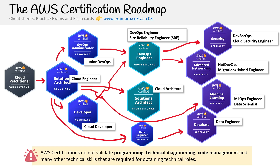Even if you don't plan on taking the other associates like the SysOps Administrator, the Developer, or the Data Engineer, you can study the SysOps Administrator, the Solutions Architect Associate, and the Developer Associate at the same time because they have a lot of overlap. I personally recommend doing that because you'll save yourself considerable time and get the right amount of knowledge you'll need to be a cloud engineer or fill junior-level cloud roles.